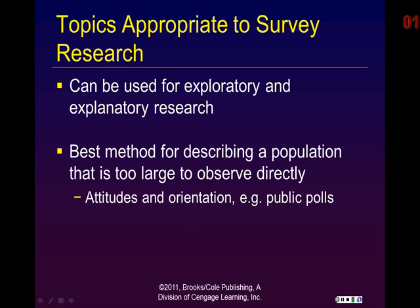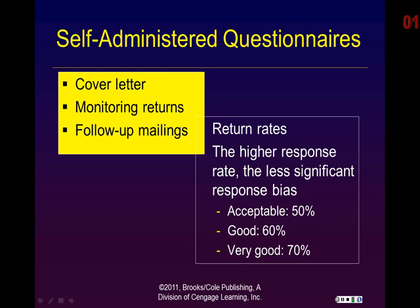Survey research can be used for both exploratory research — the kind you engage in when you only know a little bit about a topic — but it is also very amenable for use in explanatory research. It remains the best method we have for describing populations that are too large to describe and observe through direct observation. Survey research is used for attitudinal research, orientation research — for example voter intent — and to assess the prevalence of all manner of things, from drug abuse to sexually transmitted diseases. Typically the most common tool in the survey researcher's kit was the self-administered questionnaire.